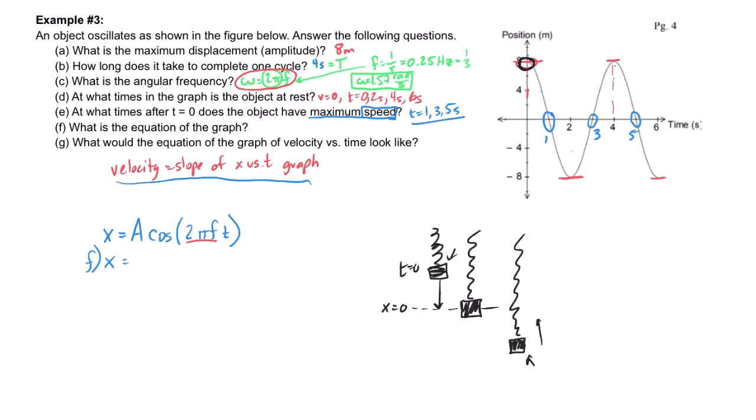8 cosine, and then 2 pi f t. 2 pi f was 1.57, or if you want to write it as pi over 2, that's fine as well, times t. And there you go. We then have the equation of the graph.